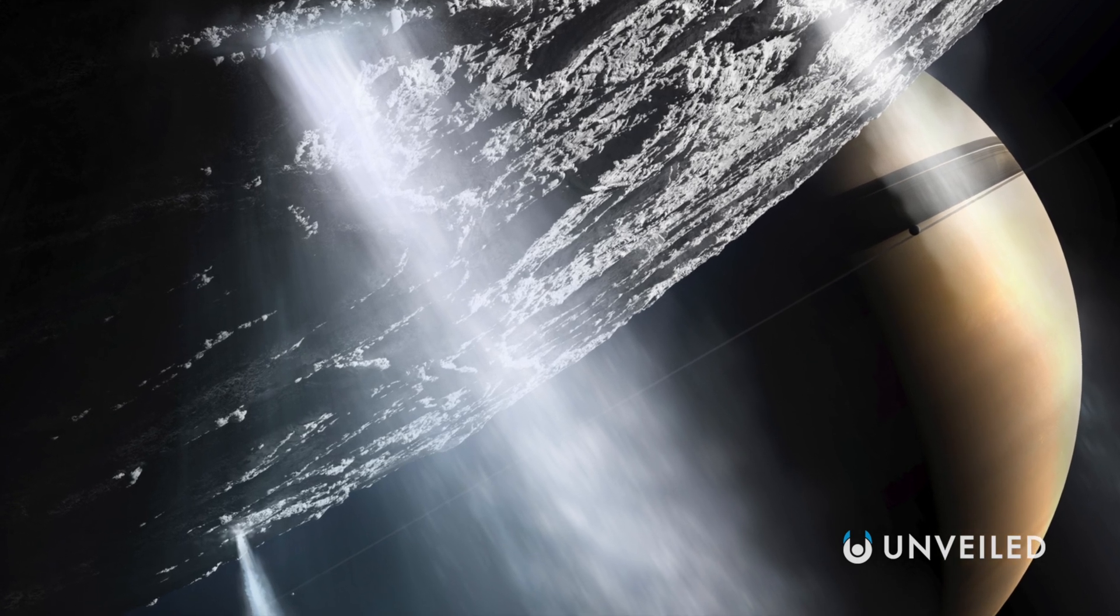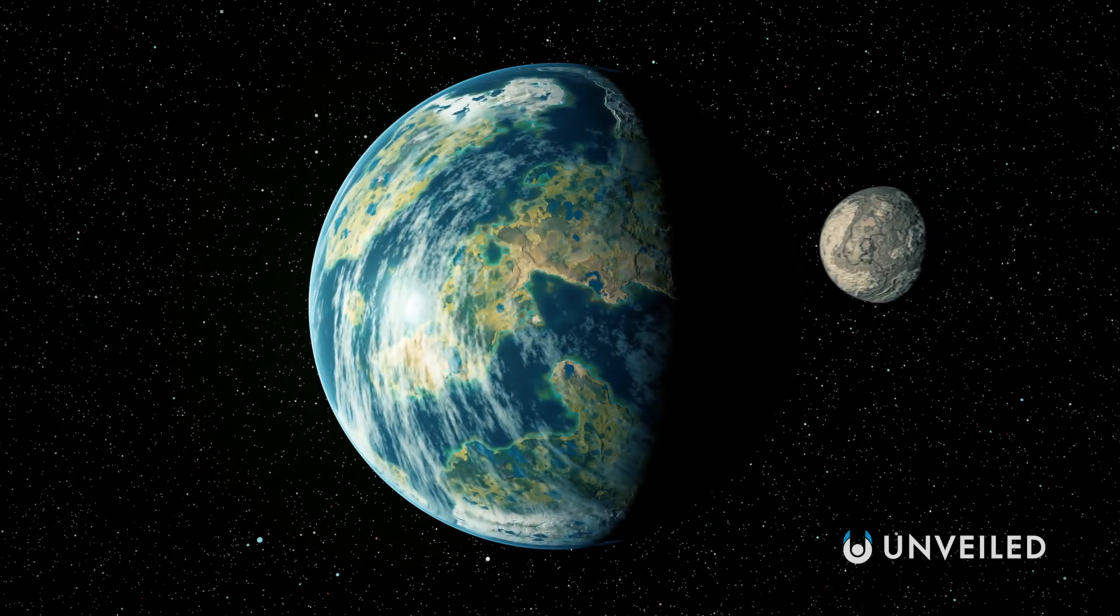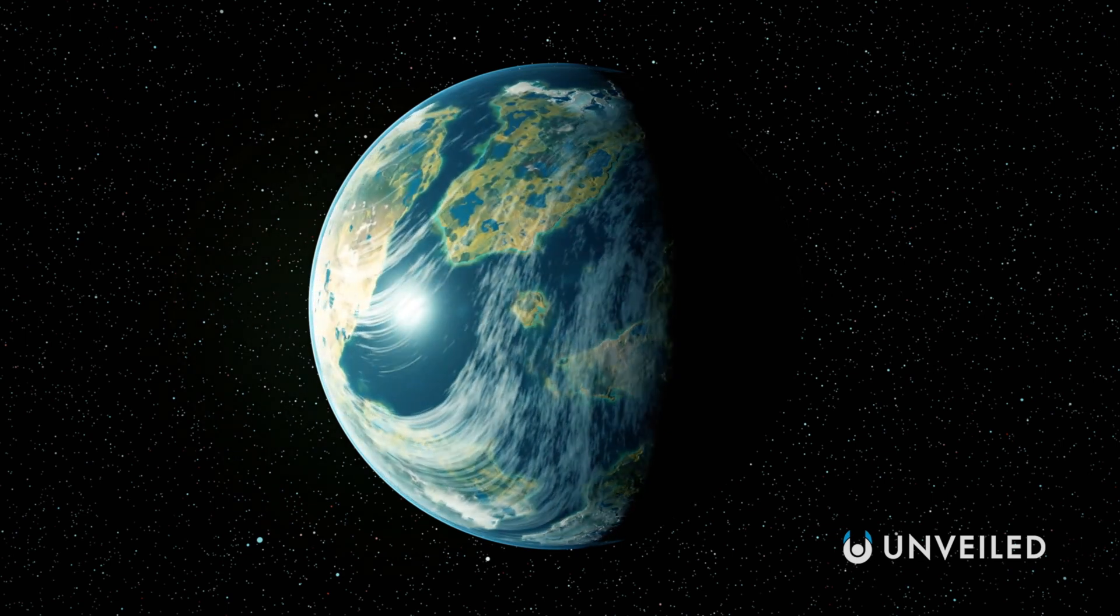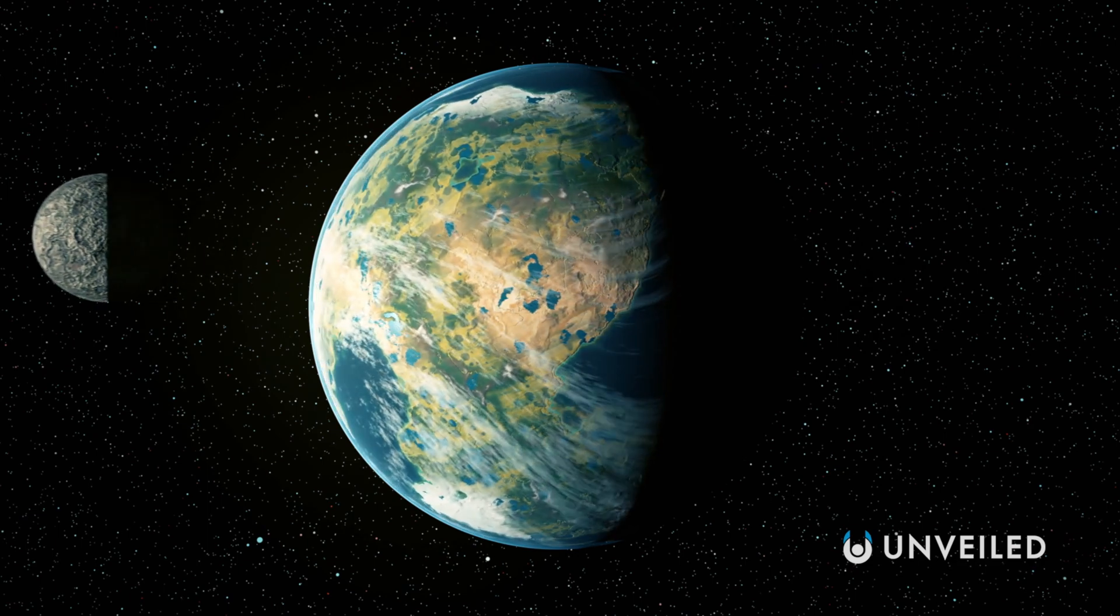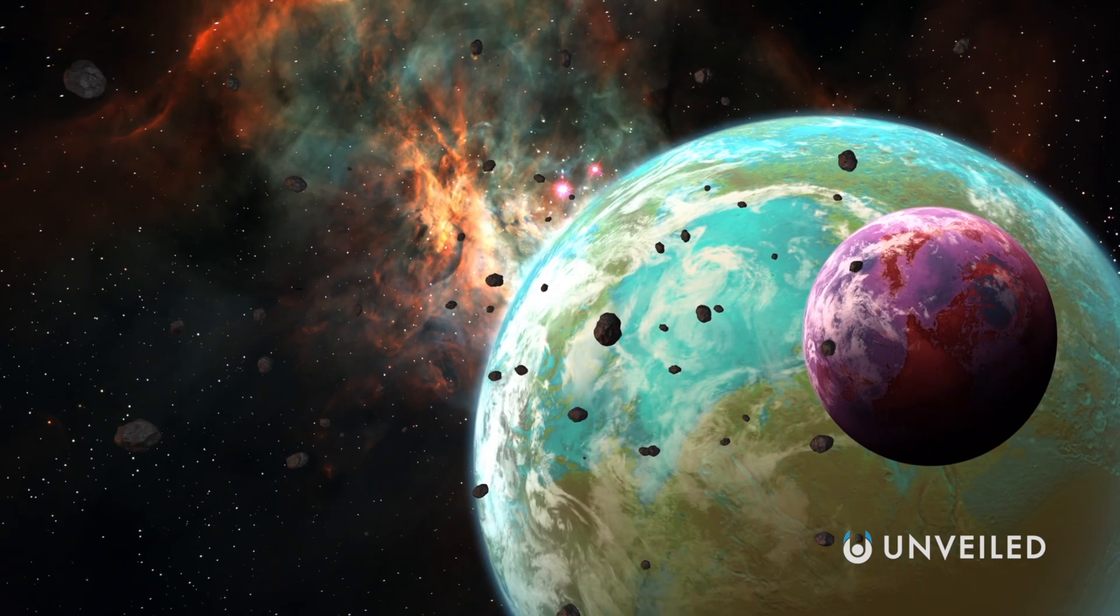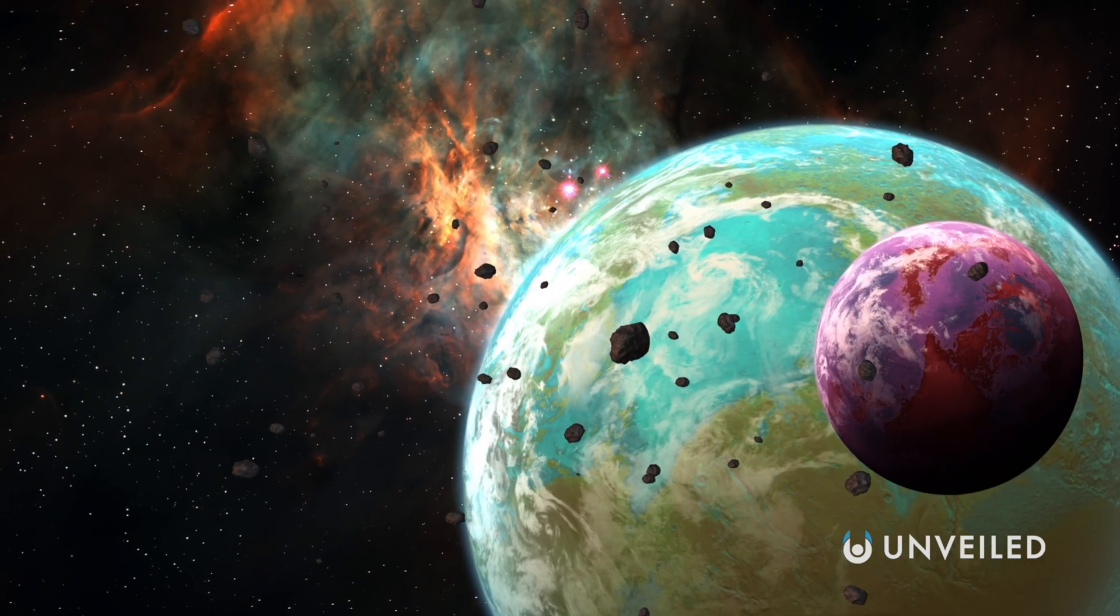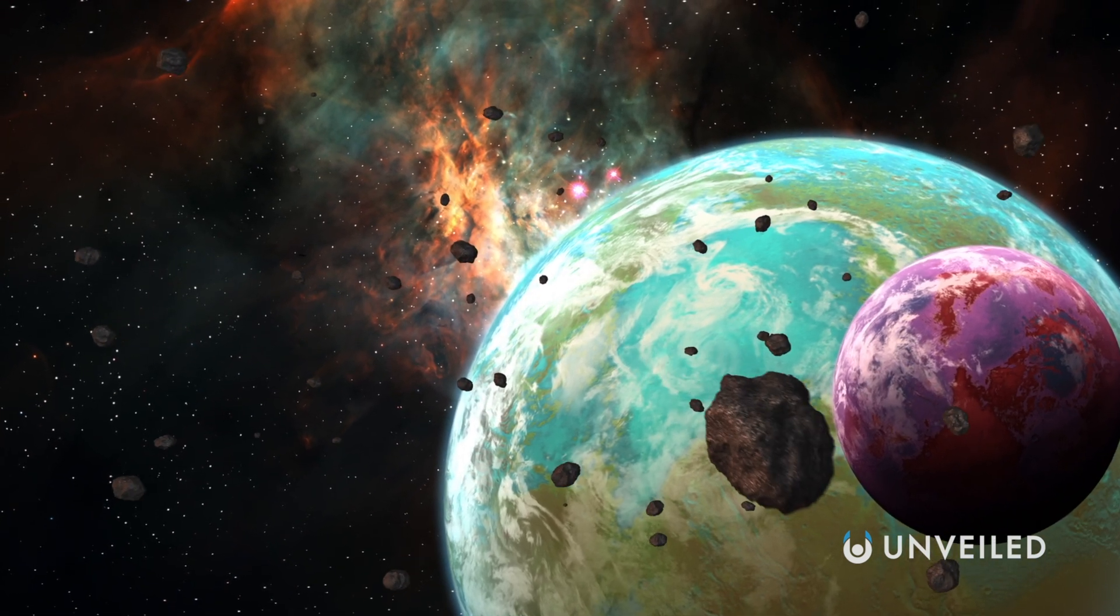So, what does make planets habitable? Well, the most crucial thing that scientists are looking for is whether or not they lie within the habitable zone of their stars. You may also hear this referred to as the Goldilocks zone, an orbitable distance that's close enough, but not too close, for temperatures to support liquid water.